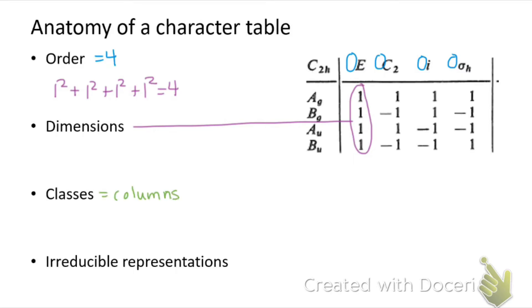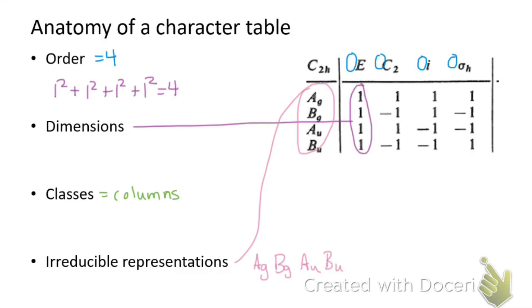The classes are the number of columns in our character table — here there are four classes representing the different operations. In other point groups we might have, for example, two different C2 operations, but only one C2 class. The irreducible representations are the rows in our character table, and there are four irreducible representations in the C2h point group.